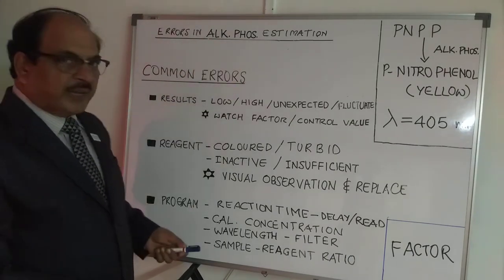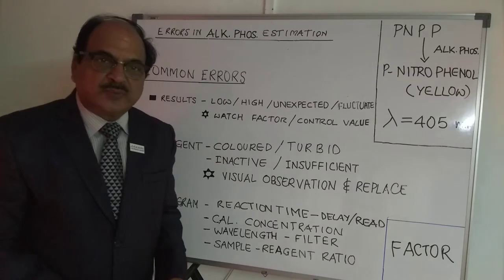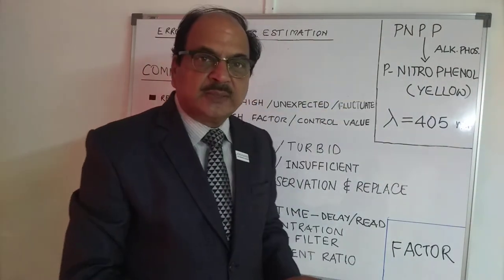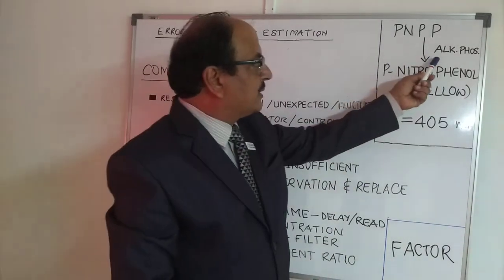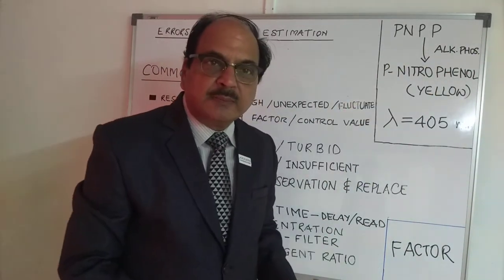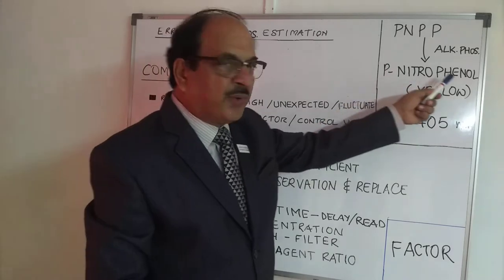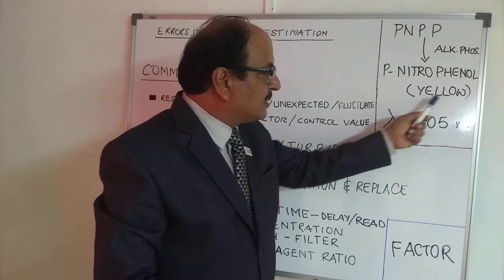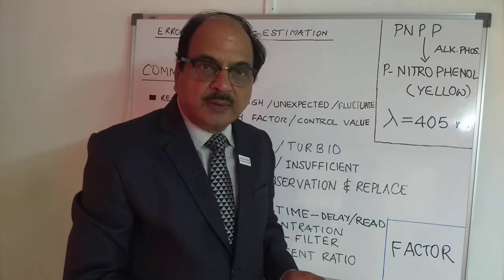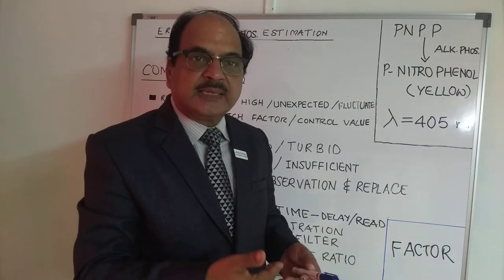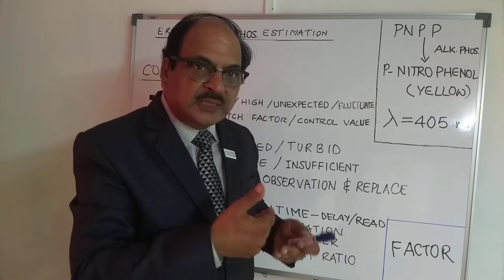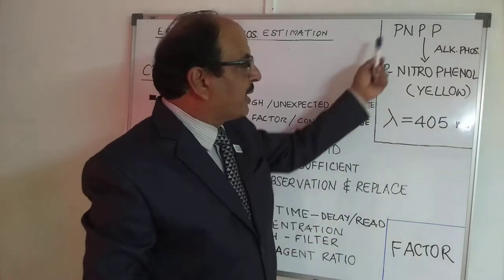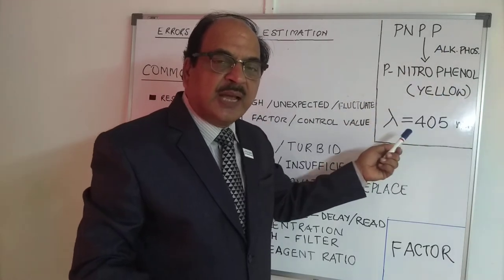Before we go into the errors, let us see how Alkaline Phosphatase really works. Paranitrophenyl phosphate is the substrate of choice, and it reacts with Alkaline Phosphatase from the serum, giving you Paranitrophenol, which is a yellow colored compound. This yellow colored compound has an absorbance at 405 nanometers. Since this is a kinetic assay, the increase in 405 nanometer absorbance is the measure of the Paranitrophenol-phosphate based Alkaline Phosphatase kit.